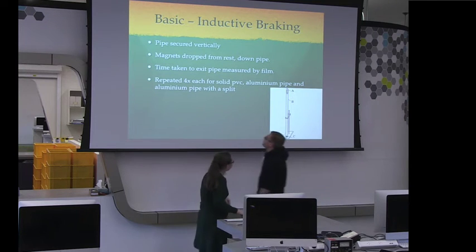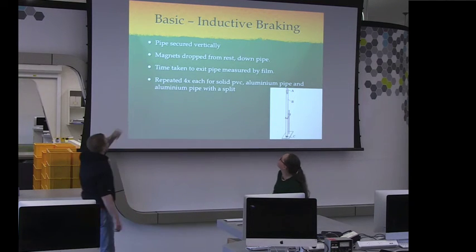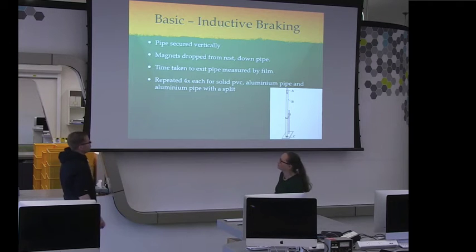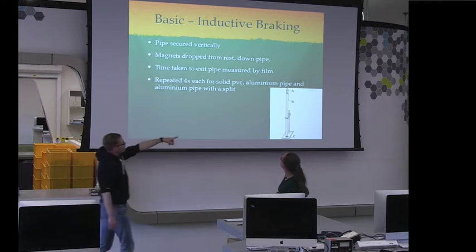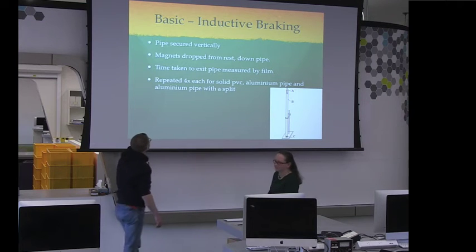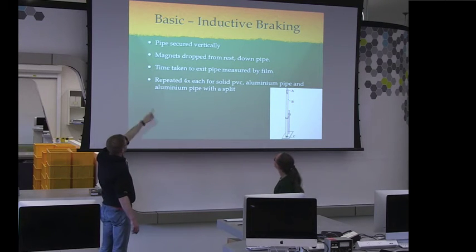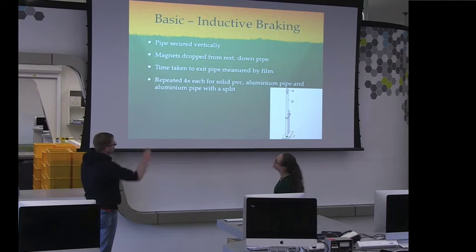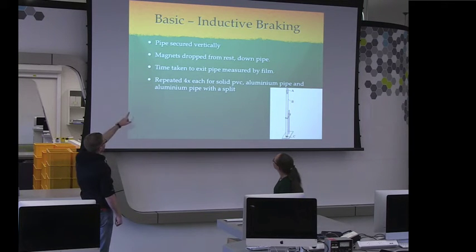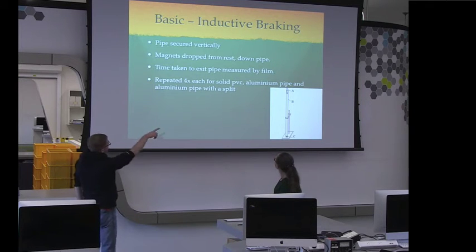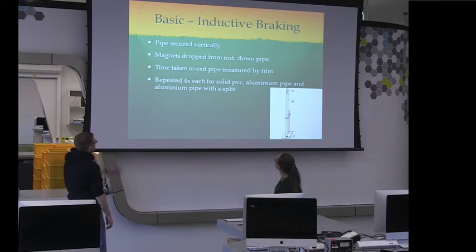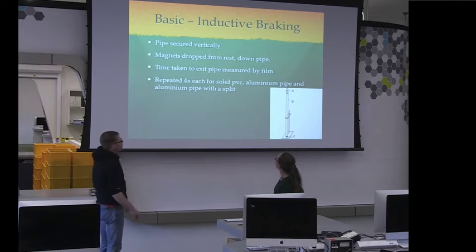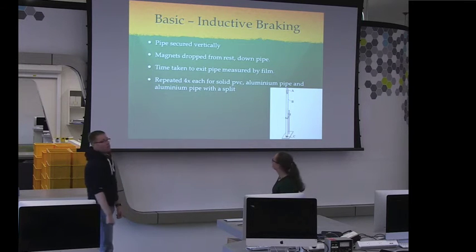So first, we now talk about the basic experiment which is inductive braking. And we've got a nice little diagram over there where you can see what we did. We have a pipe that is secured vertically. And then we drop magnets from rest that they fall down the pipe. And then we measure the time it takes a magnet to exit, measure that on film. And then we repeated that four times for each different pipe that we have and compared the three.